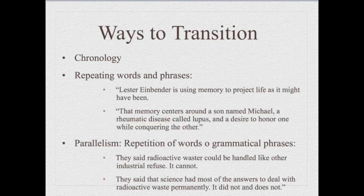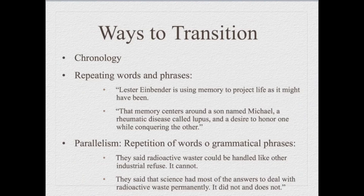Some ways that we can transition: chronology is a great way — first, second, third, lastly. Repeating words and phrases is another method. For example: 'Lester Einbender is using memory to project life as it might have been. That memory centers around a son named Michael.' Using the word 'memory' connects one paragraph to the next. The idea of parallelism — repeating words or grammatical phrases — also works: 'They said radioactive waste could be handled like other industrial refuse; it cannot. They said that science had most of the answers to deal with radioactive waste; it does not.' This repetitive flow enables you to connect from one idea to the next.